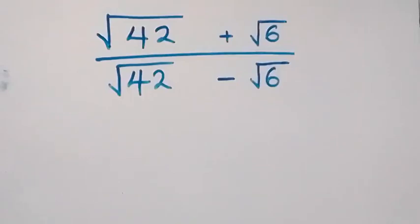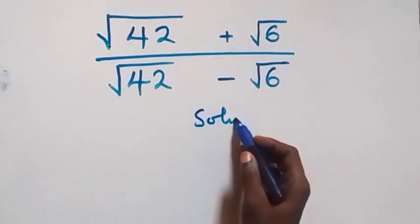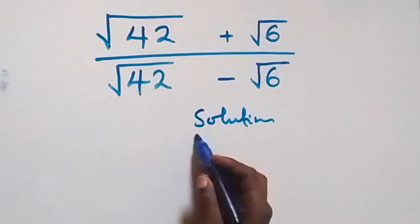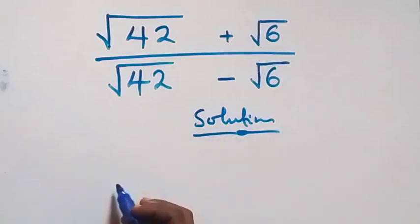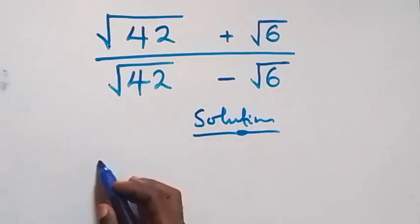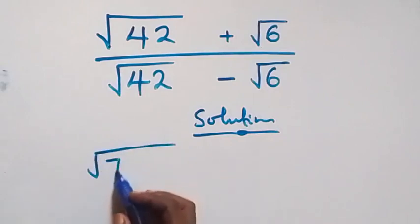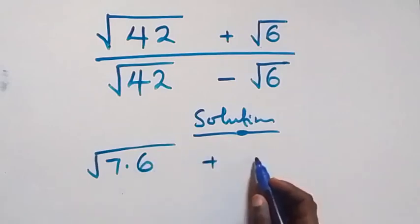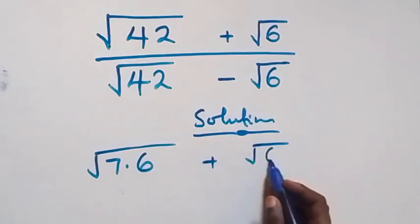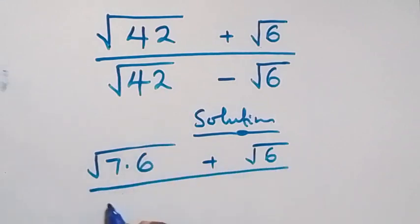Hello, you are welcome. How to solve this nice square root problem — we'll use two methods here. The first one: we can rewrite this as root of 7 times 6 plus root 6, then divided by root of 7 times 6 minus root 6.